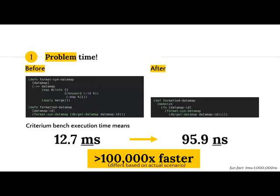This was important because we're constantly calling 'formatted-data-map' with the same parameters. We went from 4.7 milliseconds to less than a hundred nanoseconds — a massive difference. It varies based on what you have, but for us it was a big deal, especially when doing repeated calculations. One thing to note: memoize returns a function, which is why we're using 'def' here instead of 'defn'.